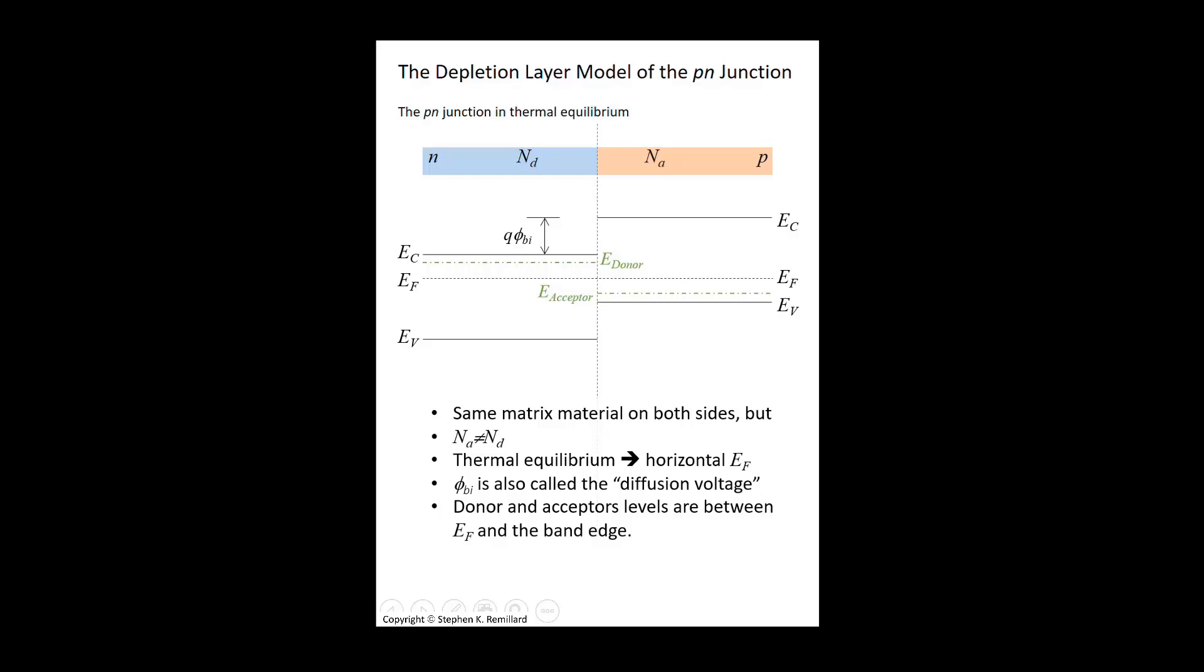The same for acceptor dopants. The distance between the valence band edge and the acceptor energy is the ionization energy. It's all it takes to put an electron from the valence band into the acceptor.